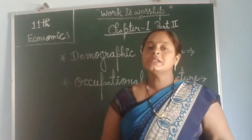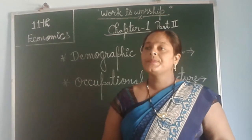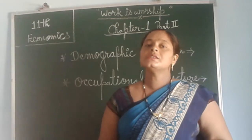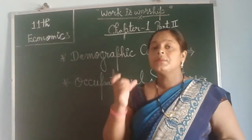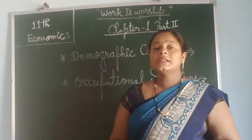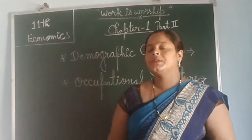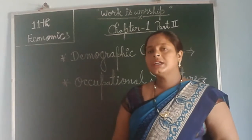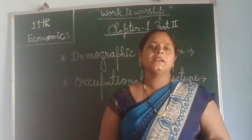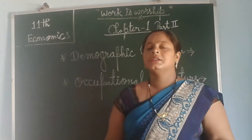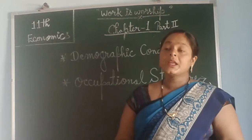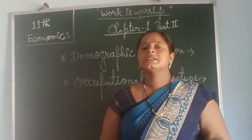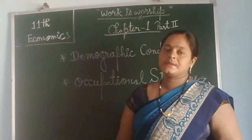At that time when the census took place, only the population's condition was recorded — the exact numbers were not written, only the condition of persons at that time. And after that, from 1921 it became fixed, and after that, every 10 years, census takes place.